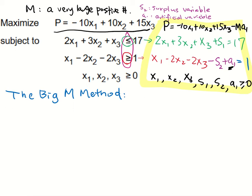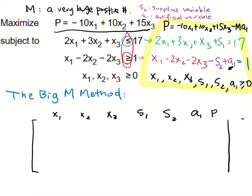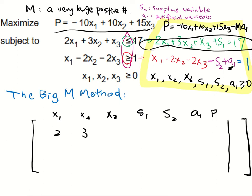Now we will turn this modified problem into a matrix. The variables we have are x1, x2, x3, then s1, s2, a1, and P. Don't forget this is the augmented matrix. The first row comes from the first equation: 2, 3, 1, 1, 0, 0, 0, and 17.